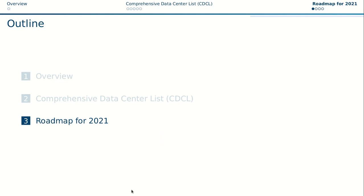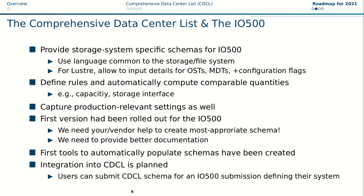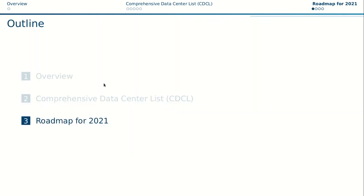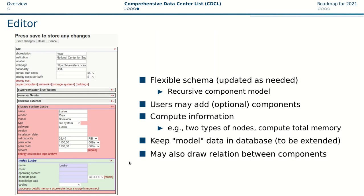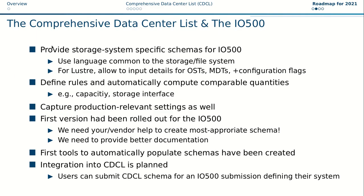Let me talk about the roadmap for 2021 and the relationship to IO500. What has been achieved in 2021 is that for the first time we now have storage system specific schemas for IO500. When you try to submit to IO500, you may have seen that you use this kind of representation, slightly adjusted for IO500. The purpose is that you can now use a language common to the storage file system, so the user and administrator who has run the IO500 benchmark can enter the information as they are accustomed to it.